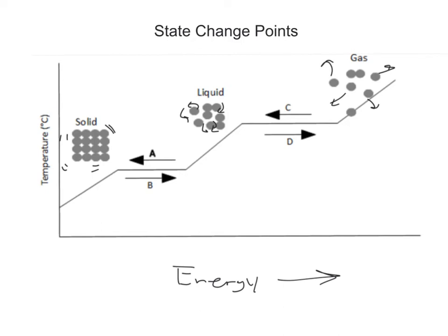Hi guys. So the next characteristic property we want to learn about is the state change points. This would include melting point and freezing point, boiling point and condensation point, or sometimes it's referred to as dew point.